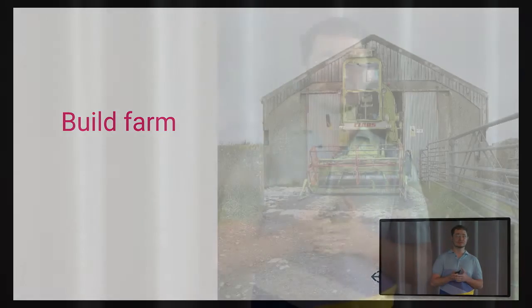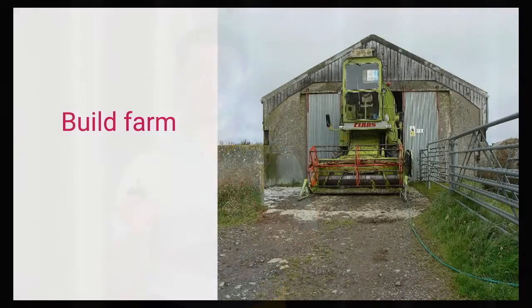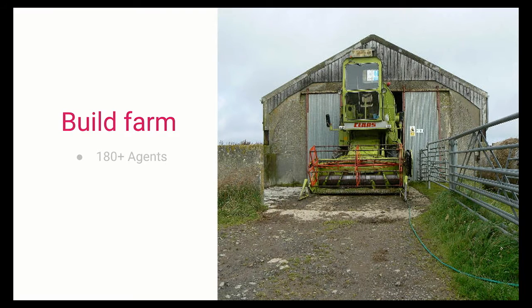About the test run statistics: daily we have around 1.5 million test runs, 10 million test runs a week, 40 million a month, and during the last year, 300 million test runs. All of those tests obviously run on a build farm. Our build farm has 180 agents, and we just delivered another build farm which is even more powerful, with around 400 agents. But still, the user experience is that it's pretty slow.